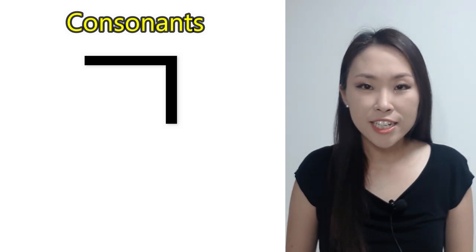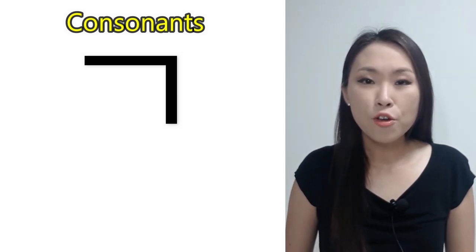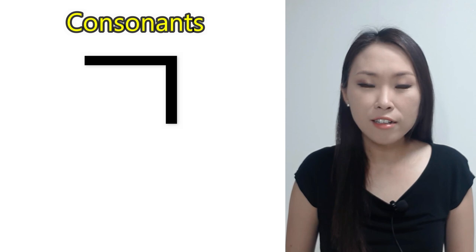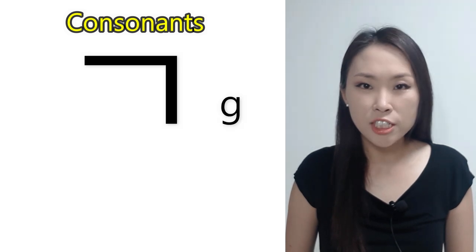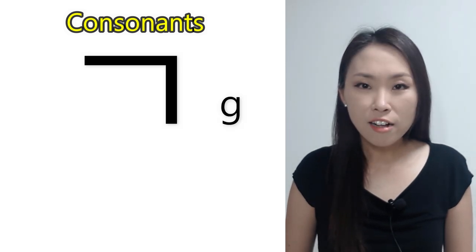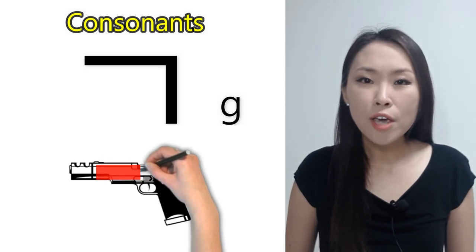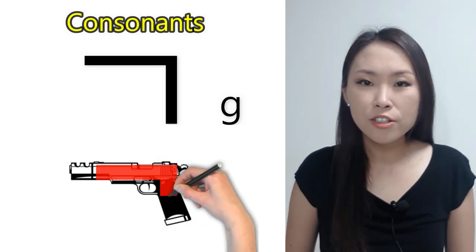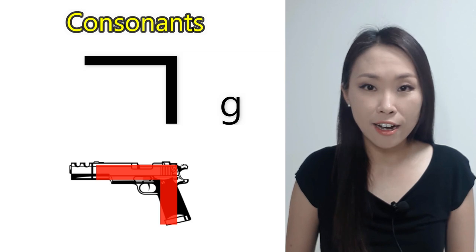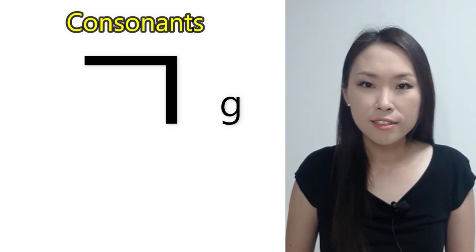The name of this consonant is ㄱ. The romanized letter for ㄱ is 'g'. ㄱ sounds like the letter 'g' in the word 'go'. The shape of ㄱ looks like ㄱ.